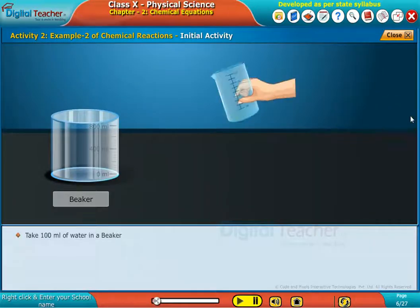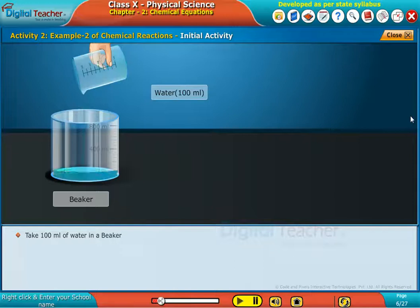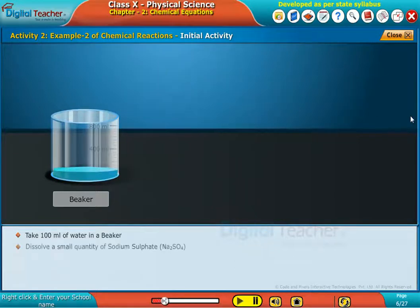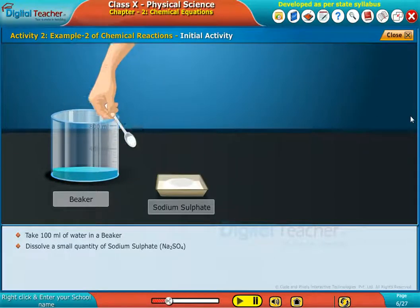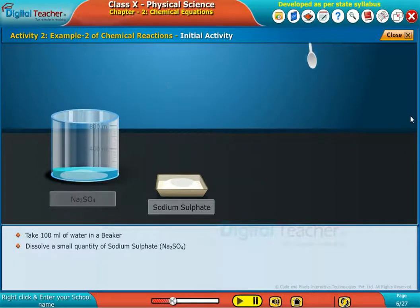Take 100 ml of water in a beaker. Dissolve a small quantity of sodium sulphate, Na2SO4.